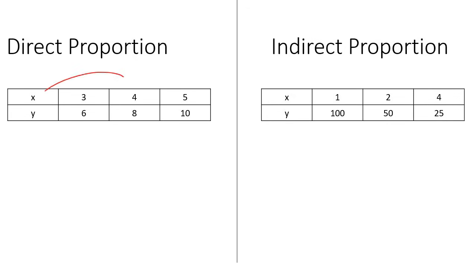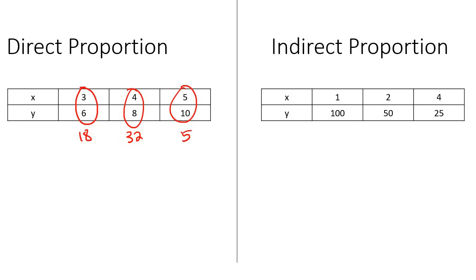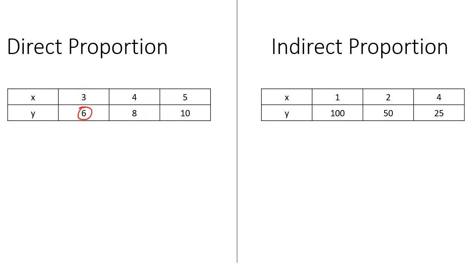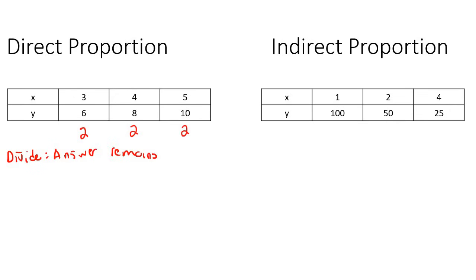Have a look at the following. So on the left-hand side here, X could be anything — X could be people or time, and then Y will just be something else. Now I want you to quickly multiply these two numbers together. What does that give you? 18. Multiply these two numbers together — 32. Multiply these two numbers together — it gives you 50. Can you see that these numbers are not the same? Then I want you to divide the numbers, so let's say the bigger number divided by the smaller number. 6 divided by 3 is 2. 8 divided by 4 is 2. 10 divided by 5 is 2. So look at that — these numbers are all the same. So with direct proportion, when you divide, the answer remains the same.